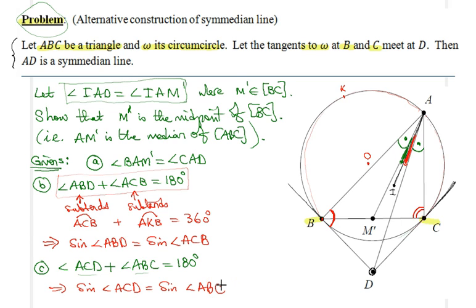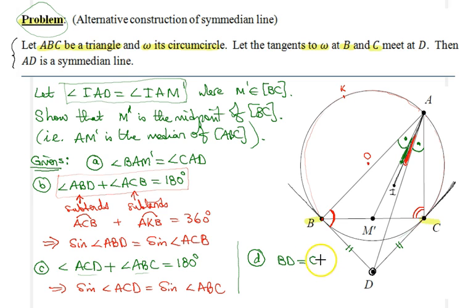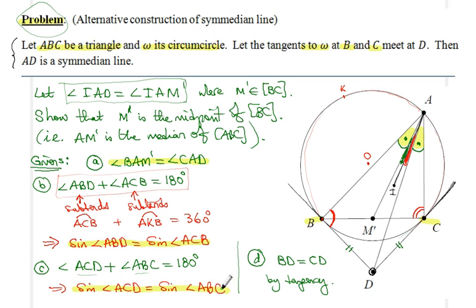Given (d): Since B and C are points of tangency, BD equals CD by tangency. So we know four results: angle BAM' equals angle CAD; sine of ABD equals sine of ACB; sine of ACD equals sine of ABC; and BD equals CD.